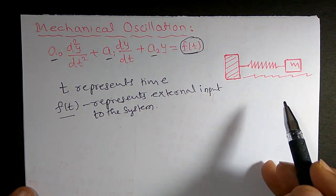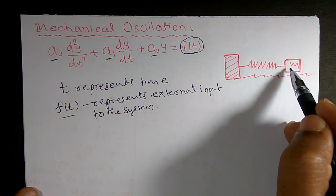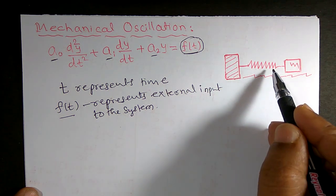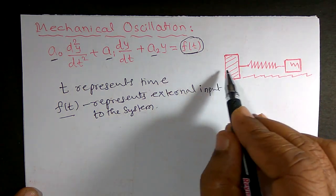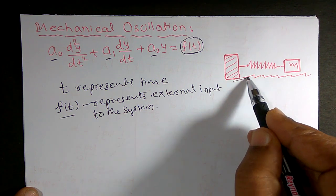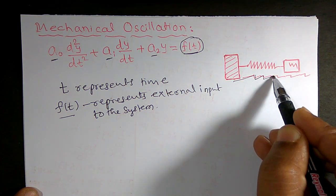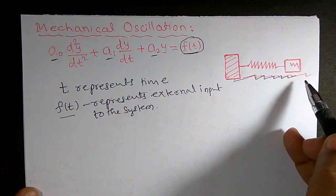It means what I can say that mass spring system. Here this is the mass and this is the spring. Spring is moving horizontally on a rough surface. So this is the rough surface.